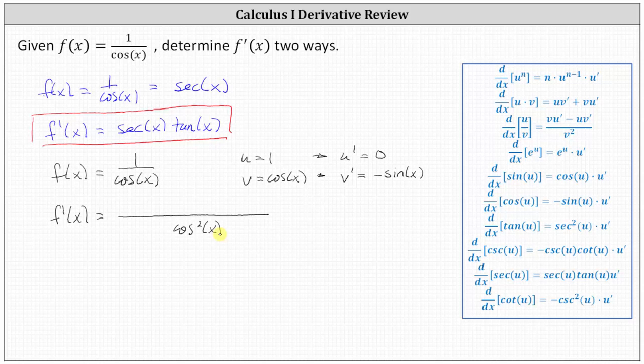And the numerator is v, or the denominator of cosine x, times u prime, which is the derivative of the numerator, which is zero,